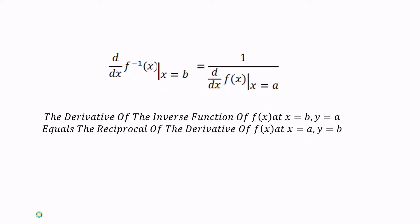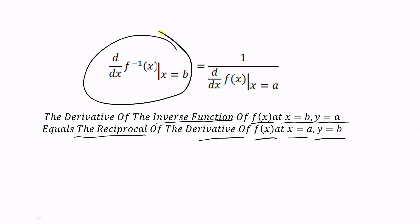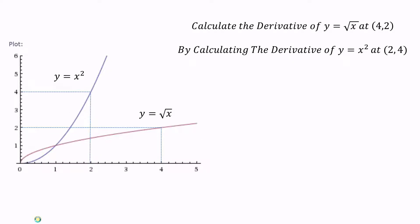So we have this relationship: the derivative of the inverse function of f of x at the point x equal b, y equal a equals the reciprocal of the derivative of f of x at the point x equal a, y equal b. If you want to know the derivative of the inverse function at x equal b, calculate the derivative of the original function at x equal a and take the reciprocal.